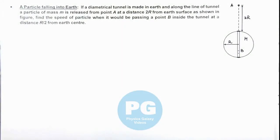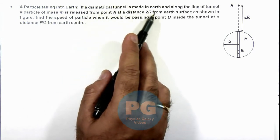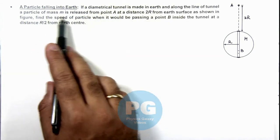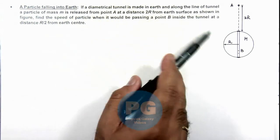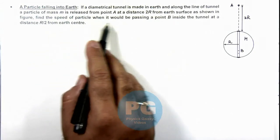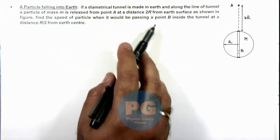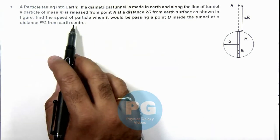In this illustration we'll discuss about a particle falling into earth. Here we are given that if a diametrical tunnel is made in earth and along the line of tunnel, a particle of mass m is released from point A at a distance 2R from earth surface as shown. We are required to find the speed of particle when it would be passing a point B inside the tunnel at a distance R/2 from earth center.